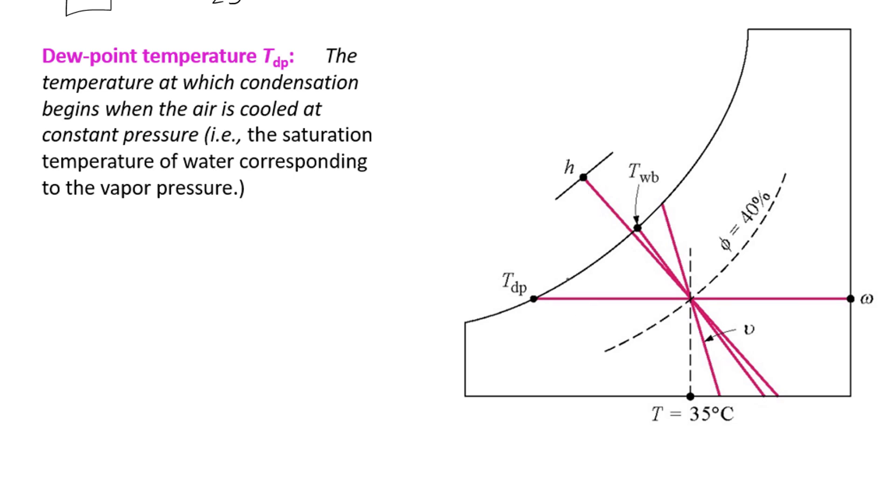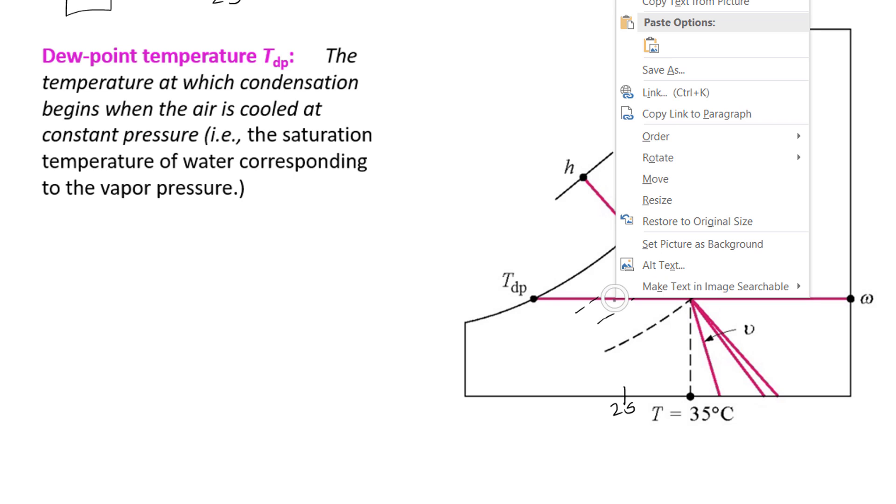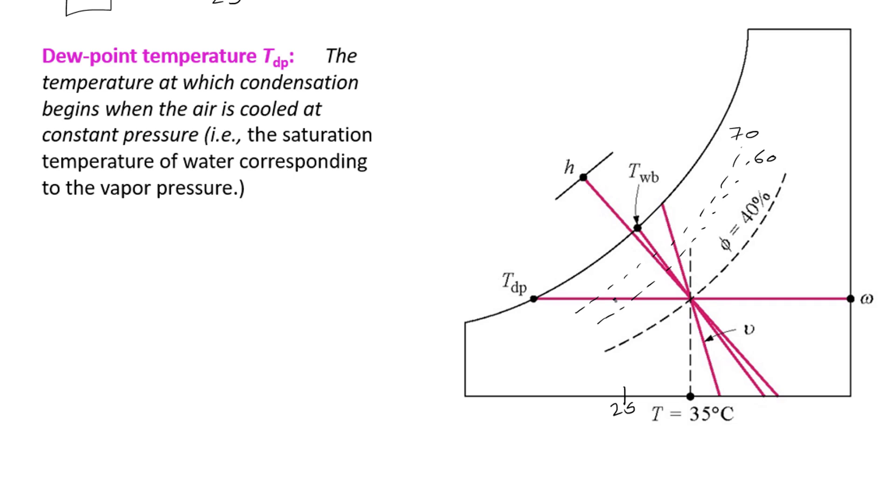So what we are looking for is we're going to have some lines along here. That line is going to be 60. That line is going to be 70. We're going to look for a dry bulb temperature of 25. I'm going to draw a line up here to where that joins there, and then we're going to draw a line across here.